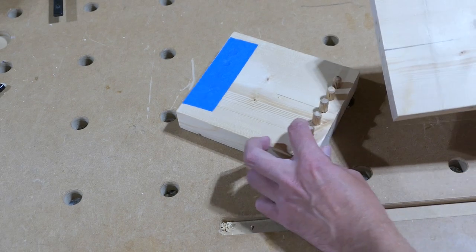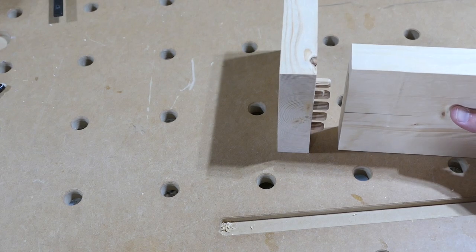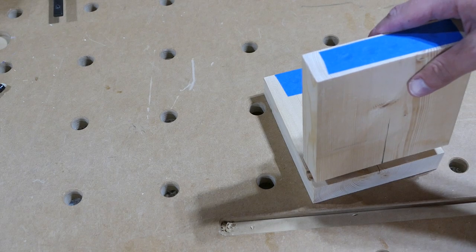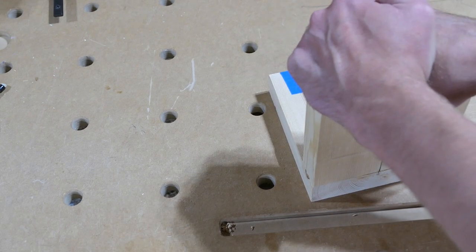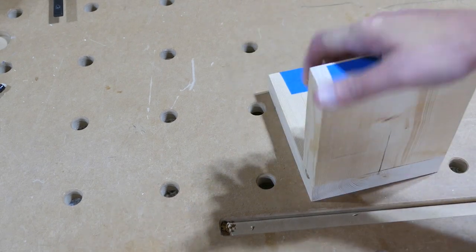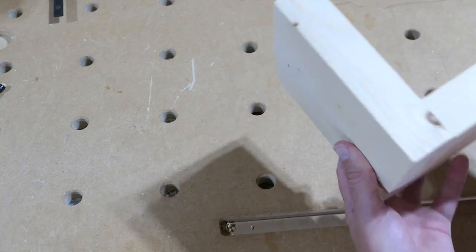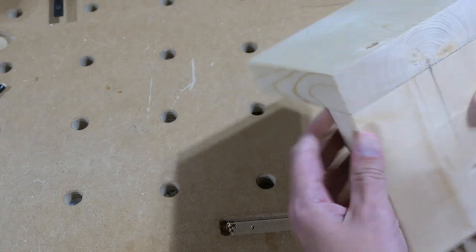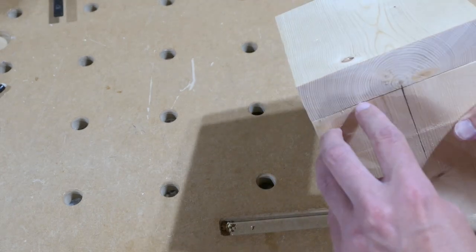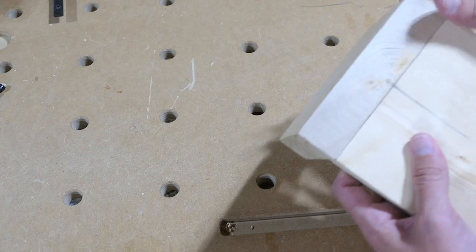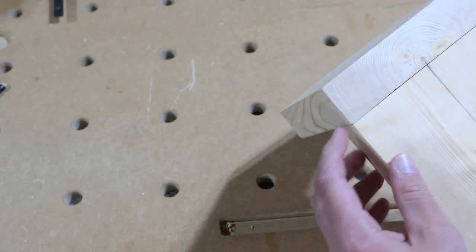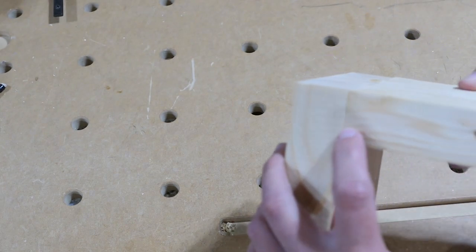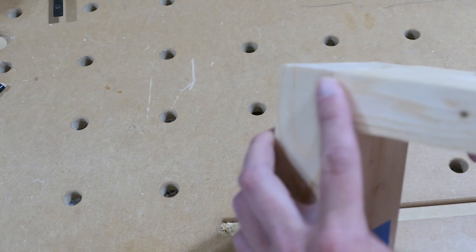Dowels are in. This is how we marked our joint, so we'll put our pieces the same way. Everything seems to line up very well, other than the cupping on my board. But if they would have been straight boards, this gap would be closed perfectly, and this edge here is perfectly flat too.